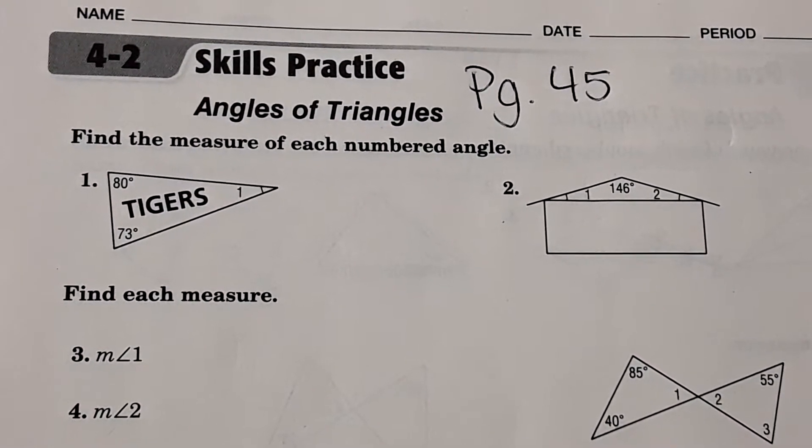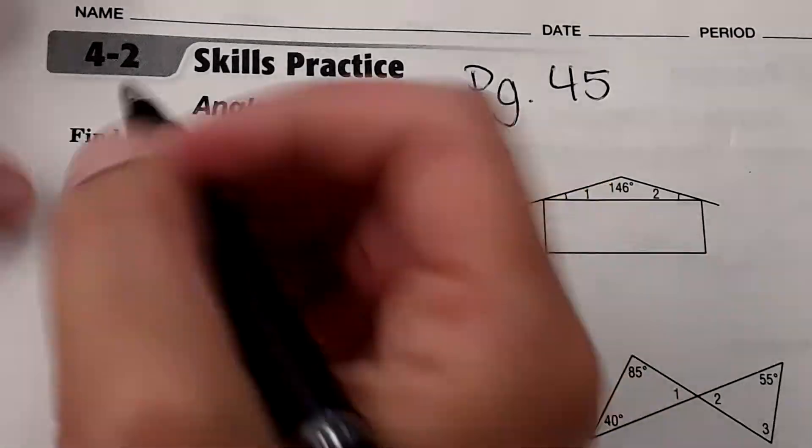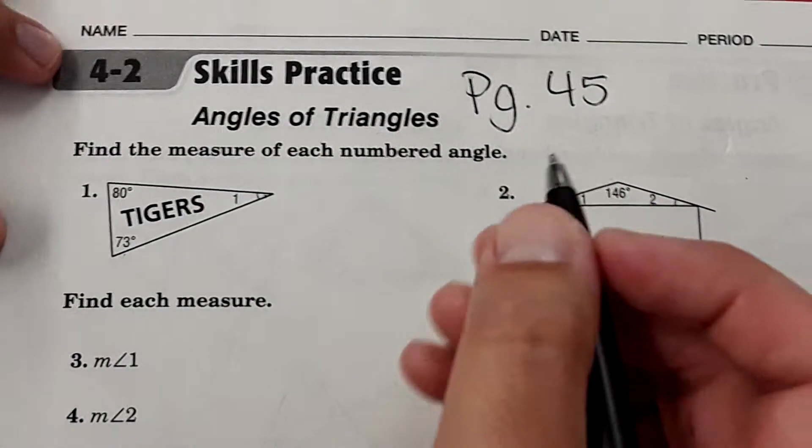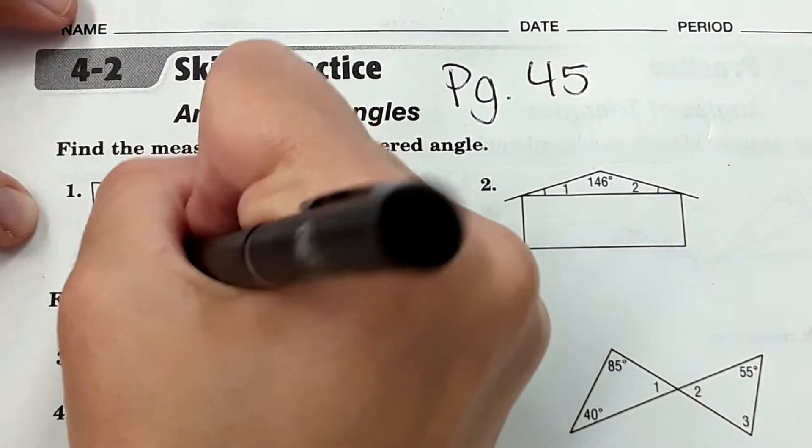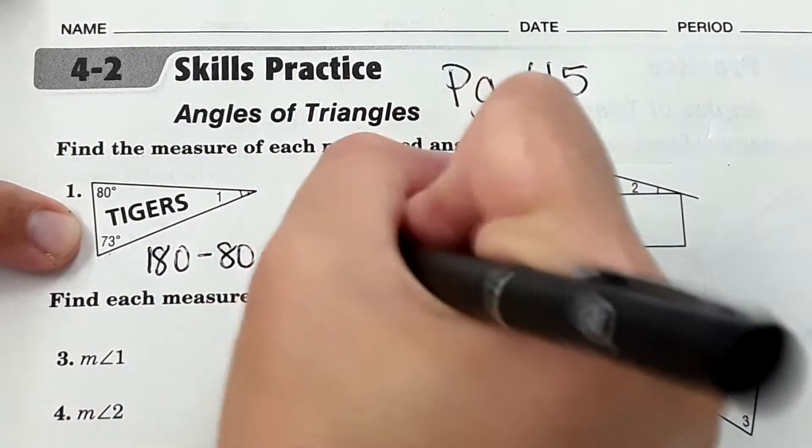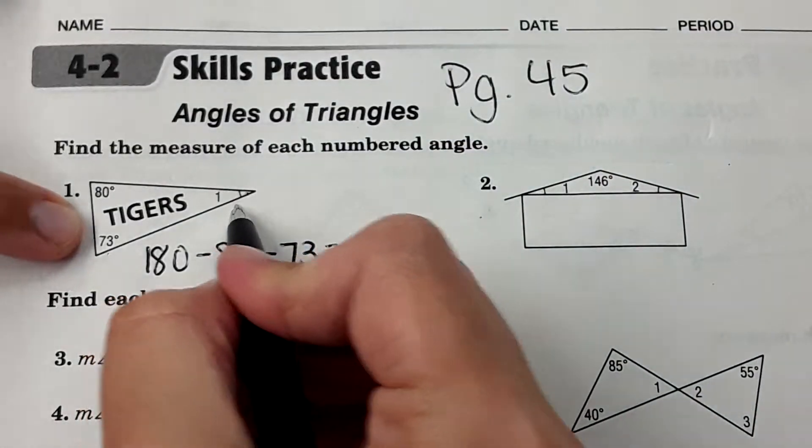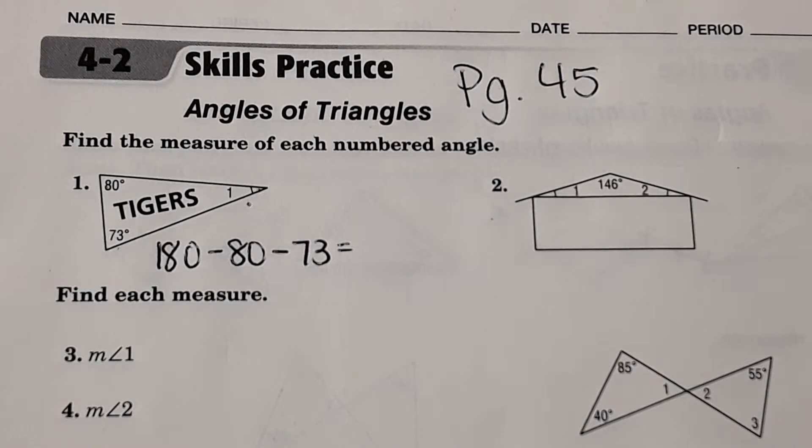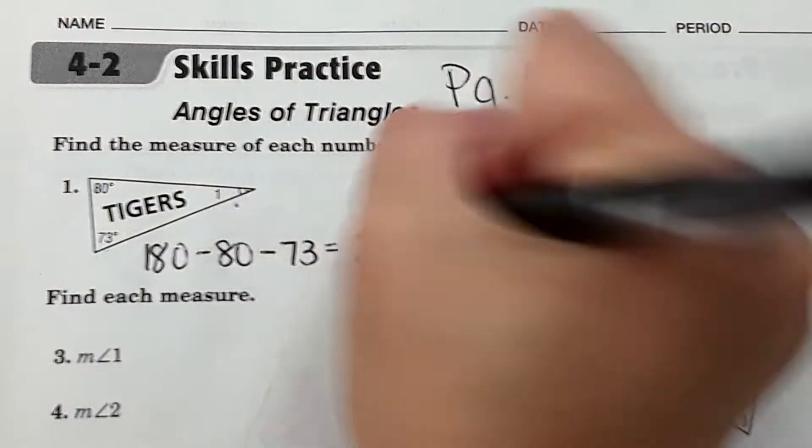Okay, so find the measure of each numbered angle. Right here we have a triangle. We know that angles of a triangle add to 180, so 180 minus the 80 degrees minus 73 would give us this angle here. When you subtract, you could use a calculator or do it by hand, you'll get 27 degrees. So measure of angle one equals 27 degrees.